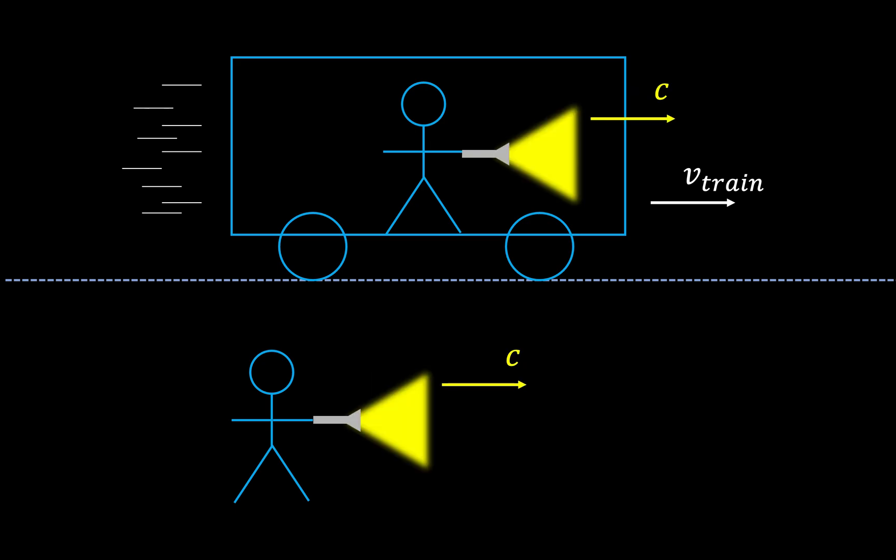However, light does not work this way. From the perspective of an observer standing on the ground, the speed of light coming from a torch would be the same, whether it was carried by somebody on a moving train or somebody on the ground as well.